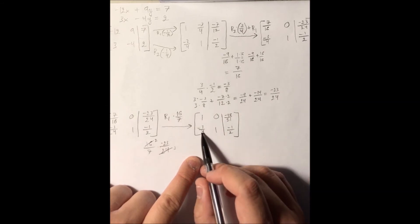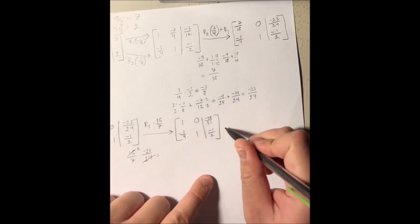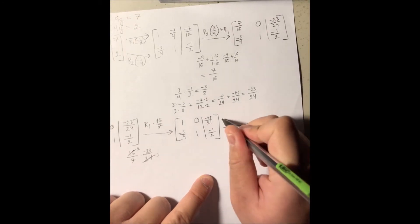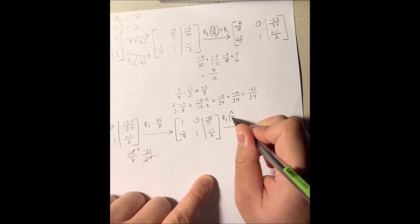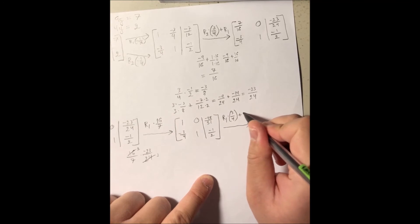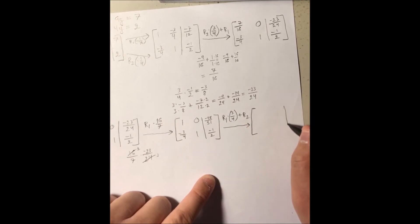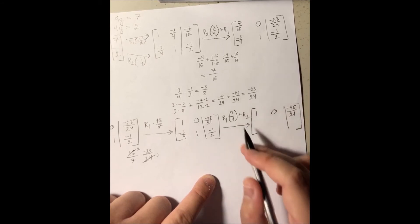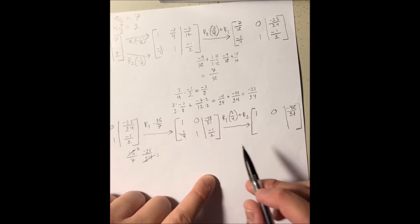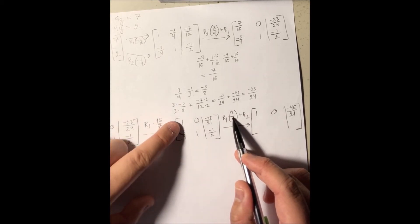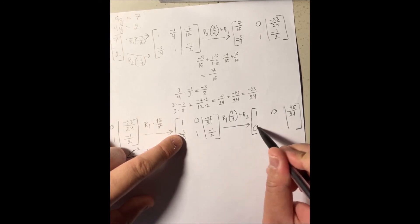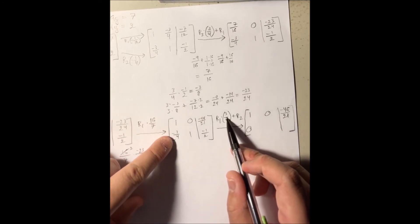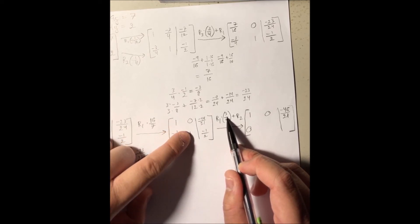Now I just have to convert the negative 3 over 4 in row 2 down to 0. I can do that by taking row 1, multiplying by 3 over 4, and adding it to row 2. Row 1 stays the same. For row 2: 3 over 4 times 1 is 3 over 4, plus negative 3 over 4 equals 0. And 3 over 4 times 0 is 0, plus 1 equals 1.